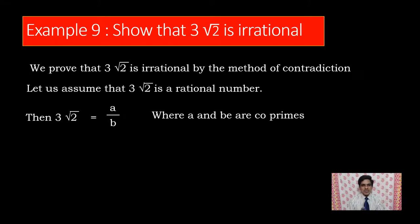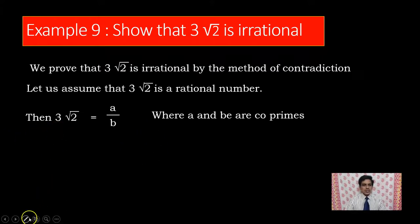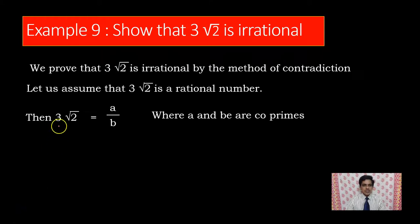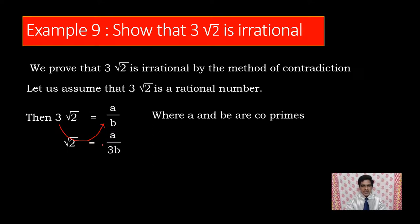So we start by writing this first statement. To prove a number is irrational, we assume it equals a by b where a and b are co-primes. On the left side we have 3 into square root of 2. Now we can transpose this 3 to the right side — it will go and divide. So square root of 2 will be equal to a divided by 3b. The denominator b now becomes 3b.